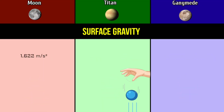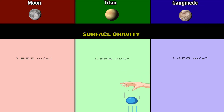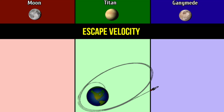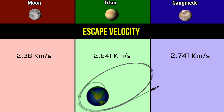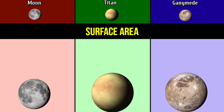Surface gravity: 1.622 meters per second squared for the Moon; 1.352 meters per second squared for Titan; 1.428 meters per second squared for Ganymede. Escape velocity: 2.38 kilometers per second for the Moon; 2.641 kilometers per second for Titan; 2.741 kilometers per second for Ganymede.